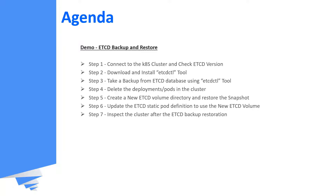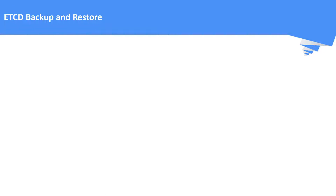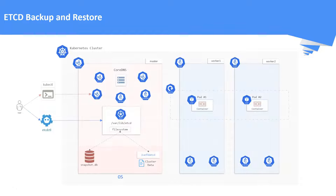This is the exact architecture of our existing setup. Here we can see we are running a three-node cluster with one master and two worker nodes. We are also running a deployment with two replicas. We have the control plane components running in the master node, of which etcd is one among them.